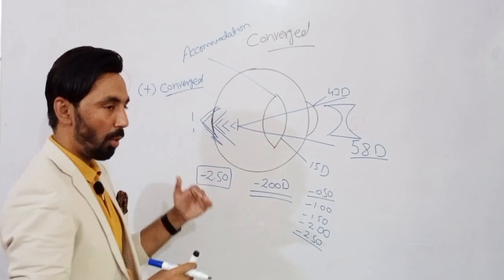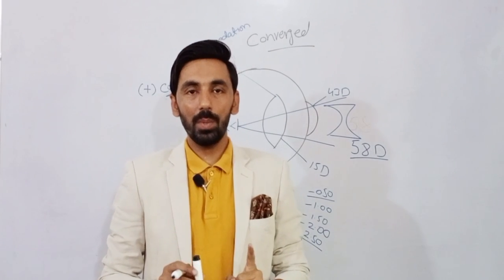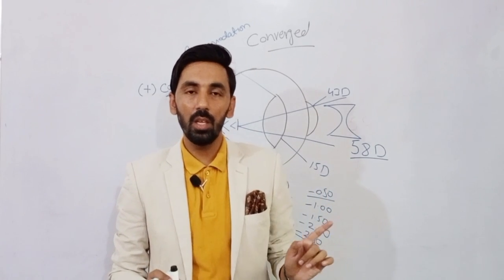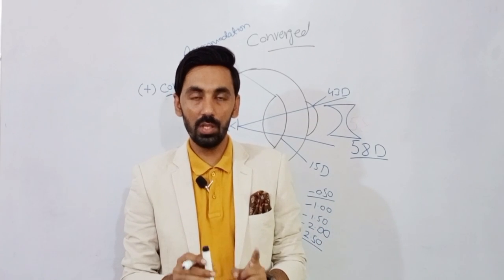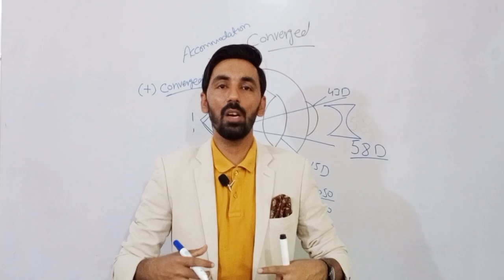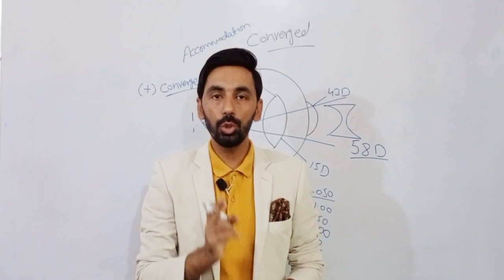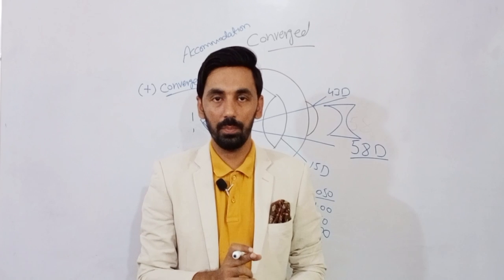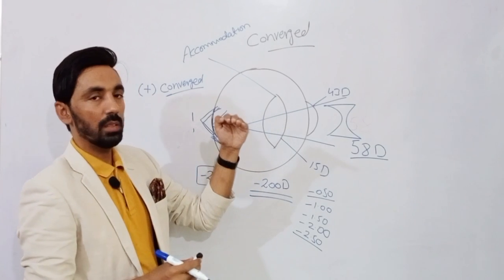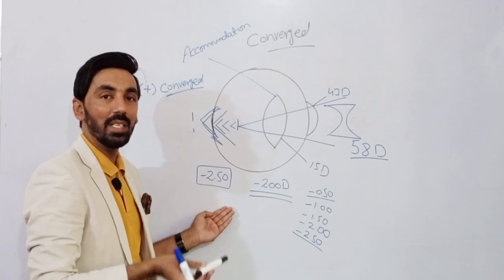The problem is the patient is accommodating. This is the rule: when we are prescribing plus spherical, minus spherical, plus cylinder, or minus cylinder — while prescribing any power — accommodation should be at rest. Whether we are correcting myopia, hypermetropia, or astigmatism, the patient's accommodation must be at zero, at rest.